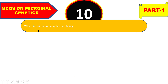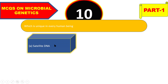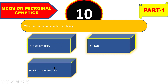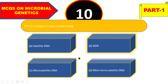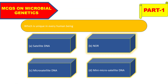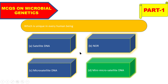The next question: which DNA is unique in every human being — satellite DNA, NOR, microsatellite DNA, or mini-satellite DNA? The right answer is mini-satellite DNA and microsatellite DNA. These are unique to every individual.